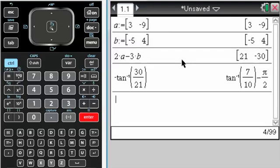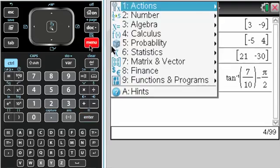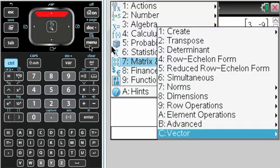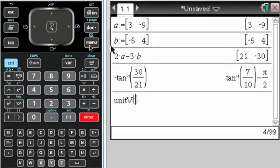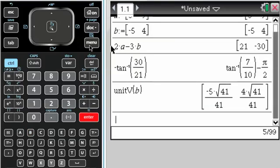Unit vectors orthogonal to b. Okay, so if I turn b into a unit vector, that's menu, and then 7, arrow up, unit vector b. It gives me that, it rationalizes it, but that doesn't really matter.